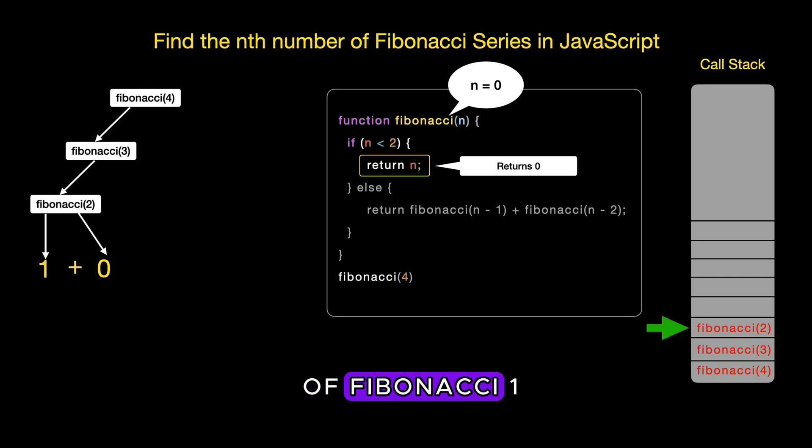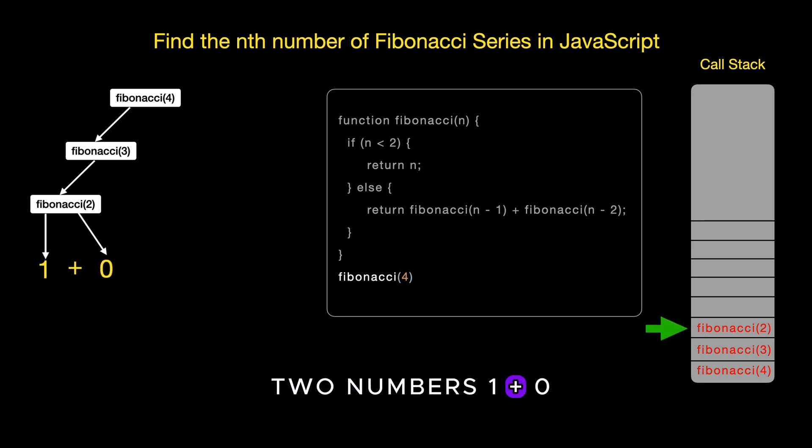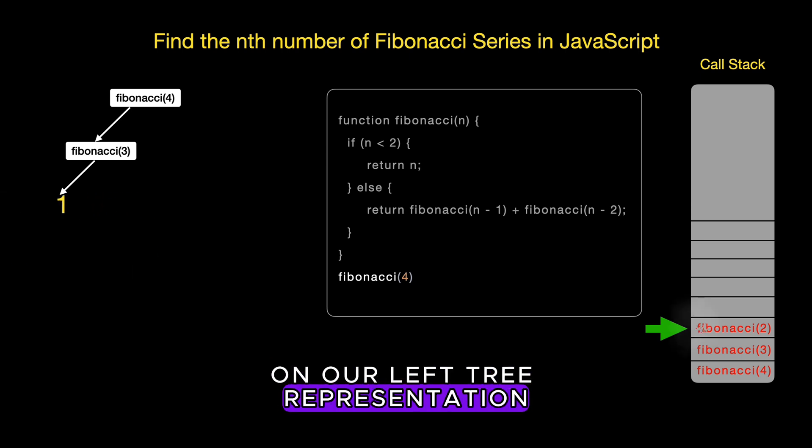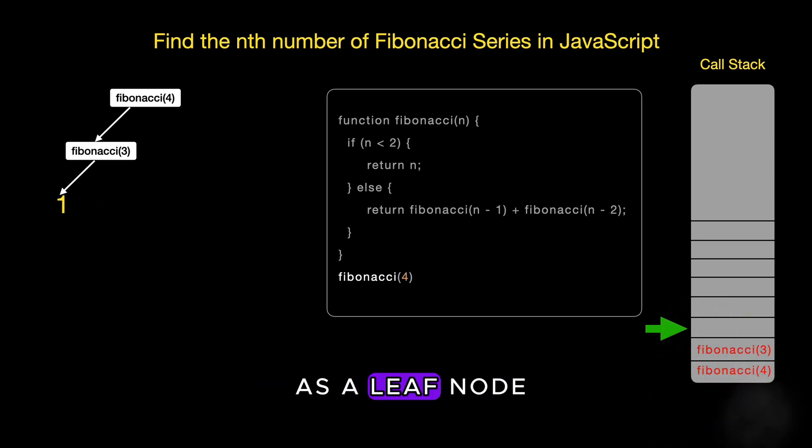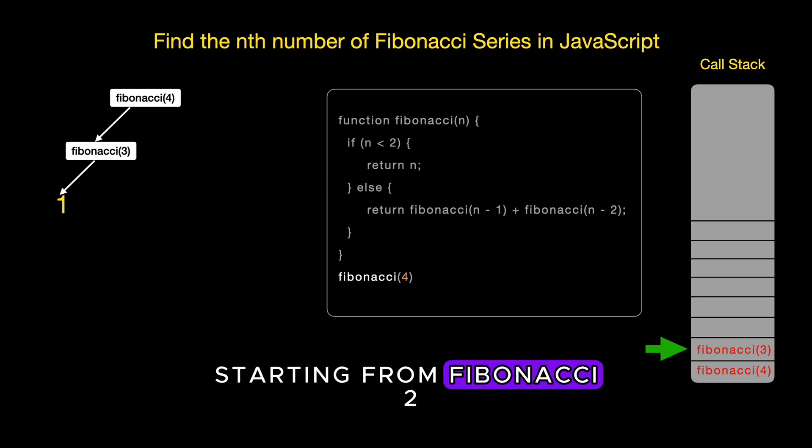We combine the result of Fibonacci 1, which is 1, with Fibonacci 0, which is 0. The sum of these two numbers, 1 plus 0, gives us the final result for Fibonacci 2, which is 1. On our left tree representation, Fibonacci 0 would appear as a leaf node, just like Fibonacci 1. It does not branch any further, and with its evaluation, we fully explored the branch starting from Fibonacci 2.